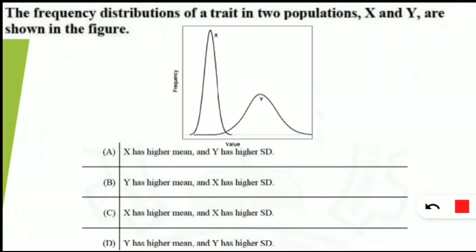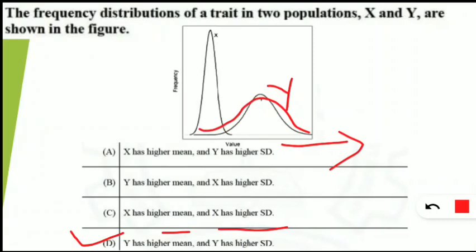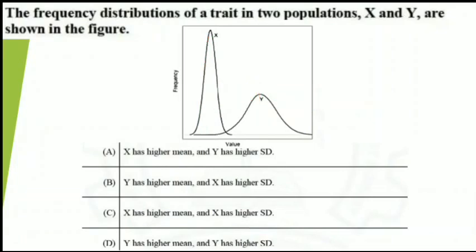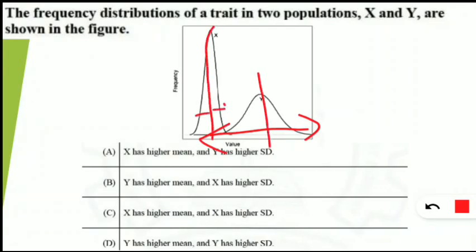The correct option is D: Y has both the higher mean and the higher standard deviation. Looking at the graph, population Y's distribution is centered at a higher value on the X-axis, so its mean is higher than X's. For standard deviation, Y shows much more spread or deviation from its mean compared to population X, which is more tightly clustered around its mean. Therefore Y has both higher mean and higher standard deviation.